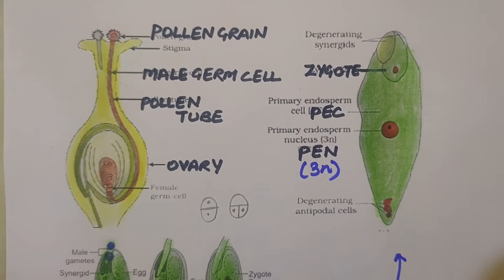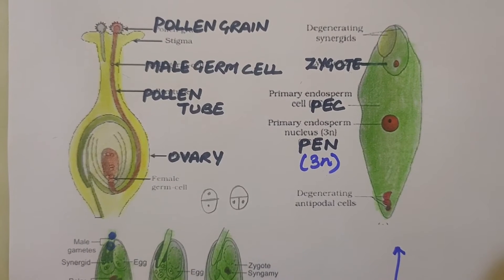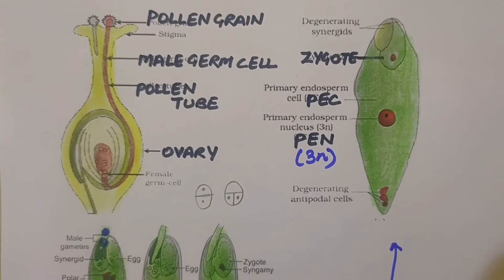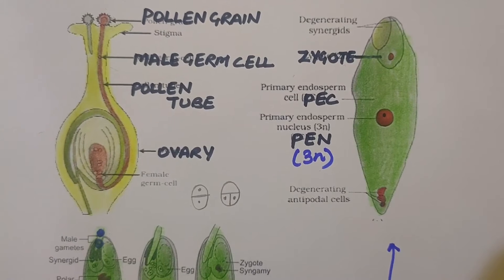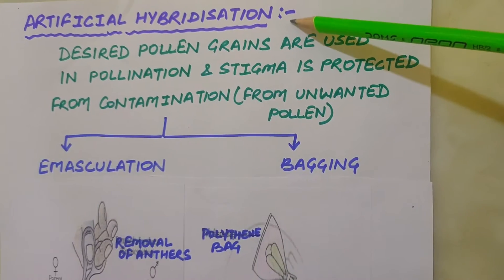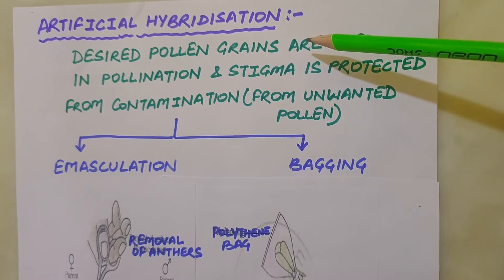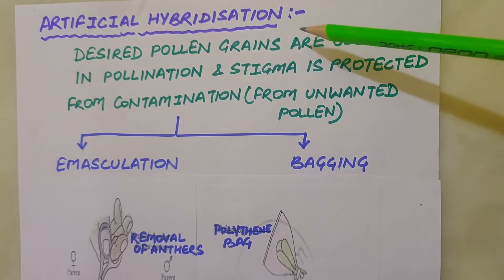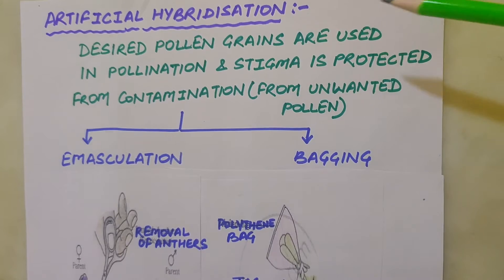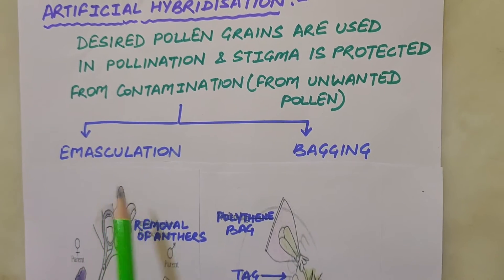The knowledge gained in this area would help plant breeders in manipulating pollen-pistil interaction even in incompatible pollinations to get desired hybrids. Breeders are interested in crossing different species and often genera to combine desirable characters to produce commercially superior varieties. Artificial hybridization is one of the major approaches of crop improvement programs. In such crossing experiments, it is important to ensure that only the desired pollen grains are used for pollination and the stigma is protected from contamination from unwanted pollen. This is achieved by emasculation and bagging techniques.